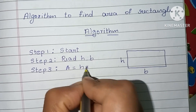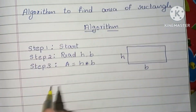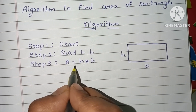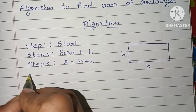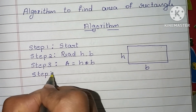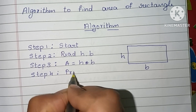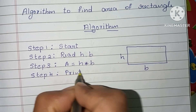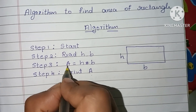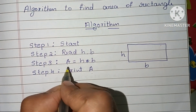In Step 3, we have to calculate the area of the rectangle. The formula is: A = h × b, that is height into base. This is the formula to find the area of a rectangle.